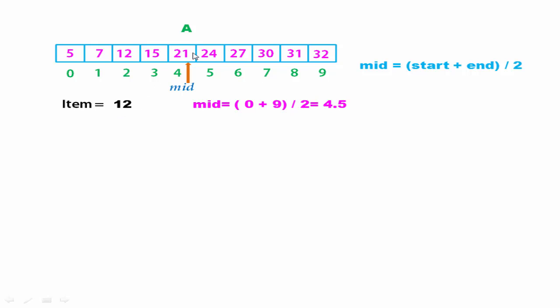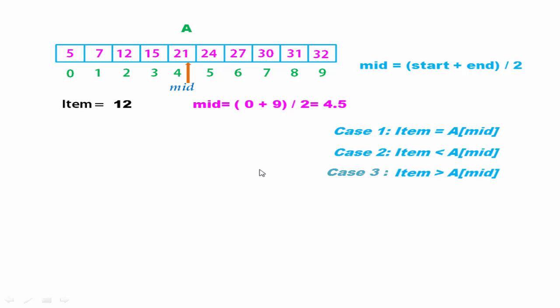Now we compare 12 with 21, and there can be 3 cases. Case 1: item equals A[mid]. Case 2: item less than A[mid]. Case 3: item greater than A[mid]. If the first condition matches, we found the element and the search is over. If item is less than the middle element, then item exists before the middle element, so we discard all elements after the middle element including the middle element itself. If item is greater than the middle element, we discard all elements before and including the middle element. In cases 2 and 3, we discard half of the array and the search base is reduced.